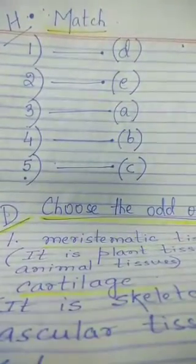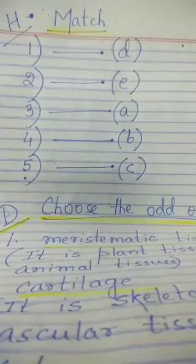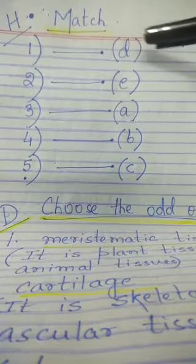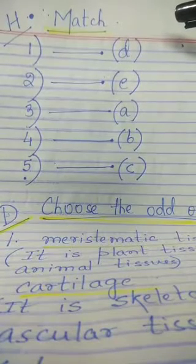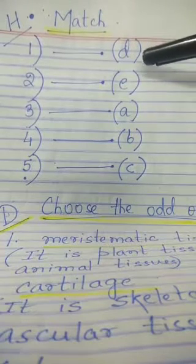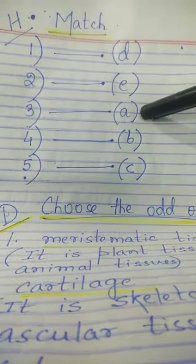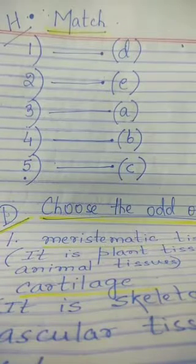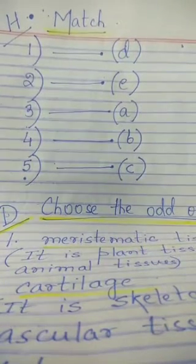Move to subpart H: match the following. Xylem and phloem match with option D: vascular bundles. Axon and dendrites match with option E: neurons. Study of tissues is called histology, option A. Growing tips of roots are called meristems, option B. Heart matches with option C: cardiac muscle.